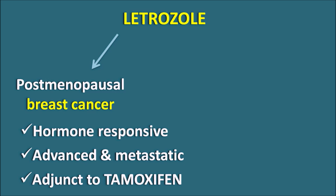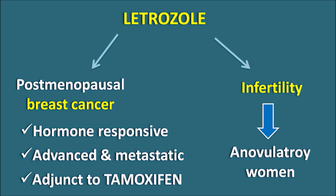Letrozole can also be used as an off-label purpose for treatment of infertility, because this drug can increase ovulation. So Letrozole can be used to treat infertility in anovulatory women — women who are having less ovulation. In anovulatory women, Clomiphene can be used, but Clomiphene can also act as an estrogen antagonist resulting in anti-estrogenic side effects. In such cases Letrozole can be used to treat infertility.